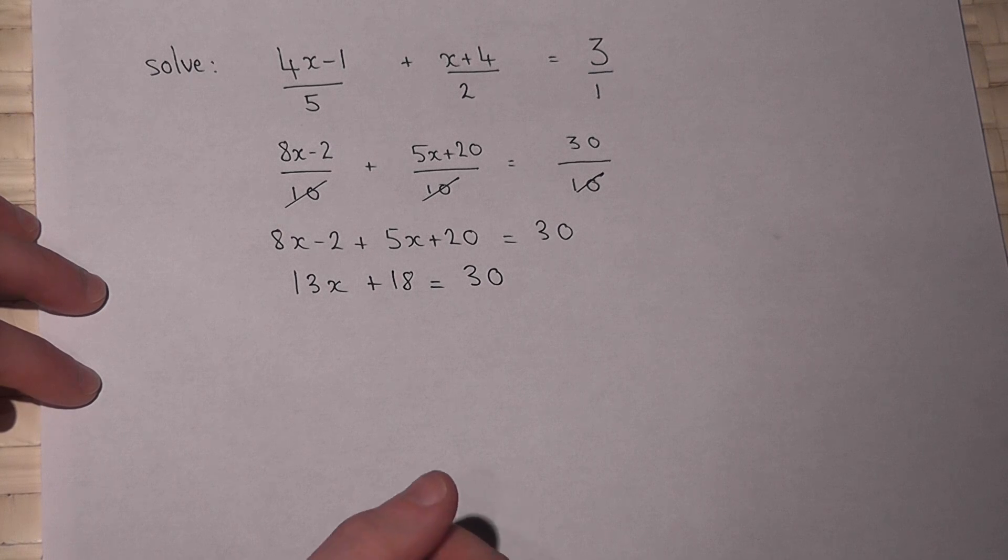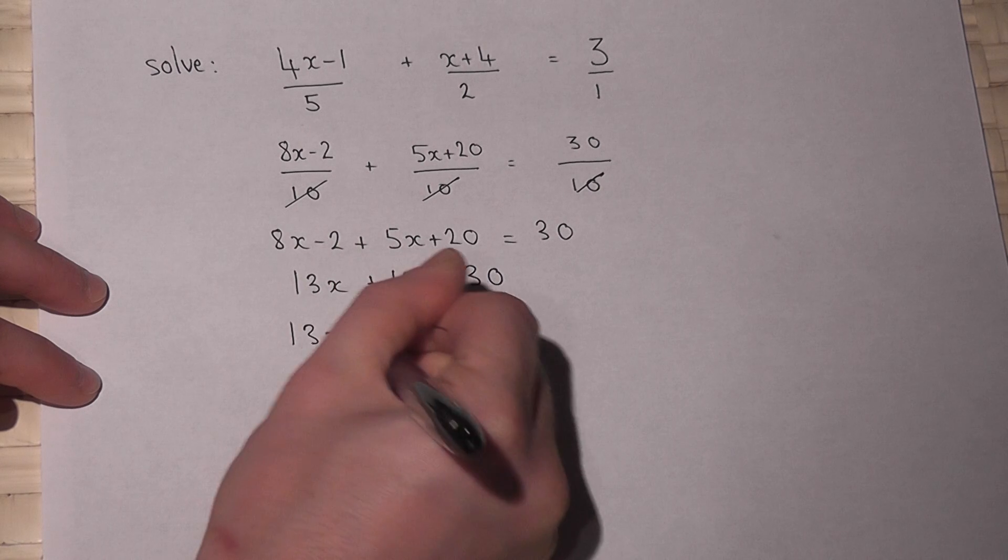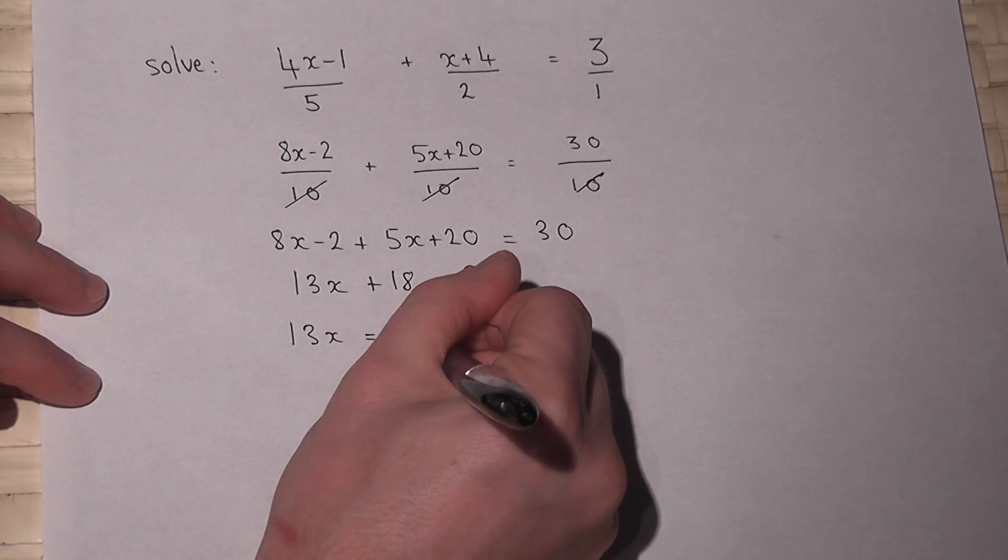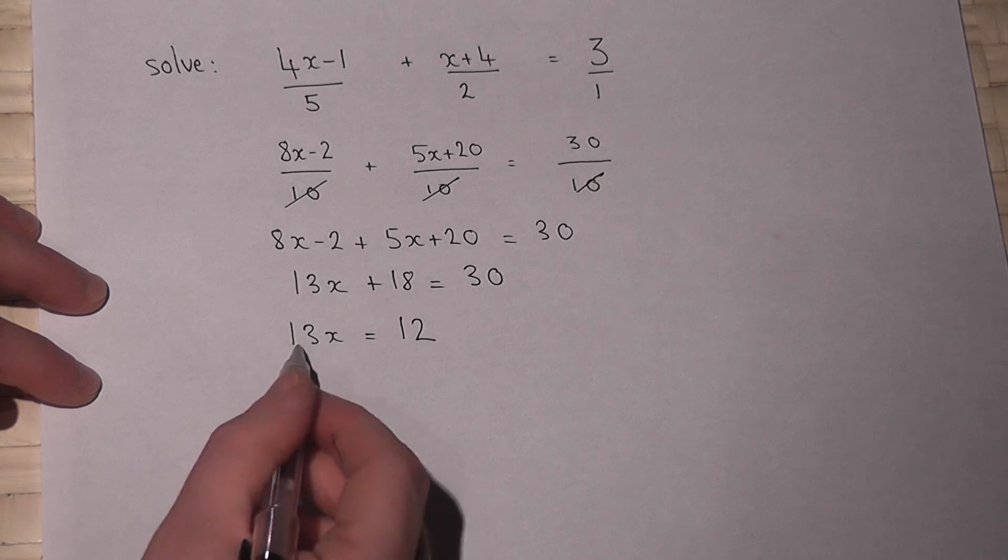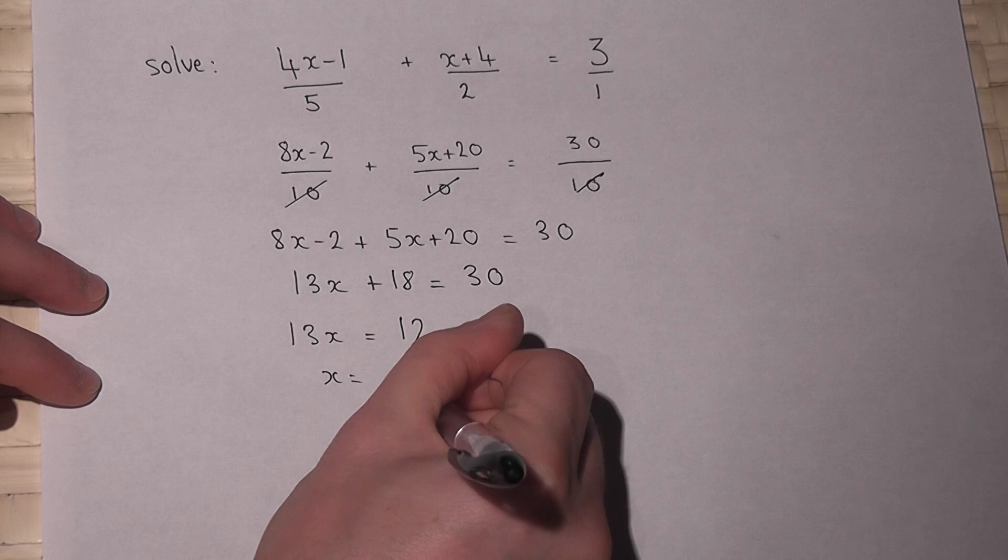I then solve the equation. So if I subtract 18, I get 13x is equal to 30 take 18, it's 12. I then divide by the coefficient, so x is equal to 12 all over 13.